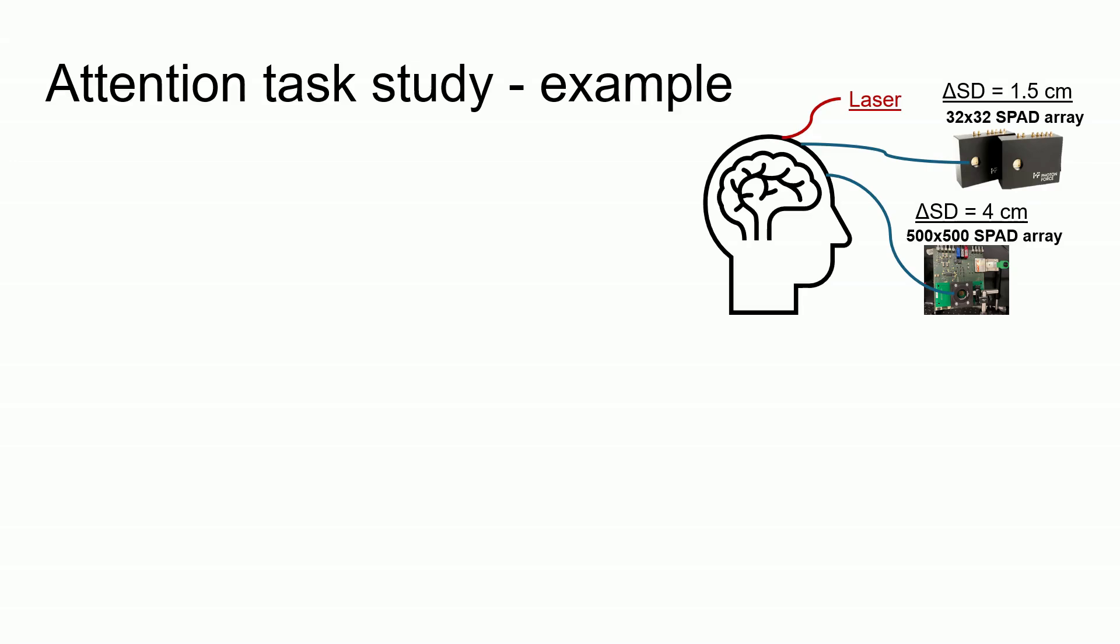The experimental procedure involved a functional activation task, which started with a 30 second control period, followed by a 50 second memory task, followed by a 30 second recovery. Memory tasks activate the prefrontal cortex, which increases blood flow to the area.